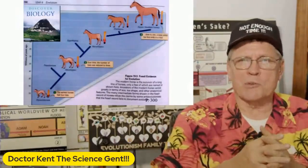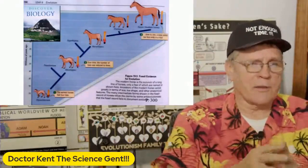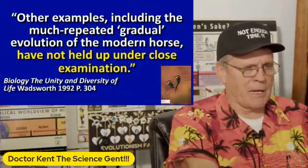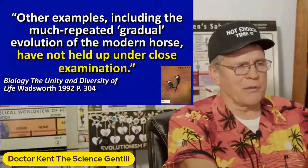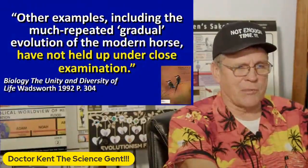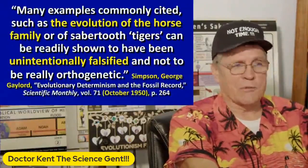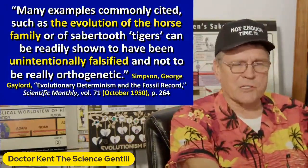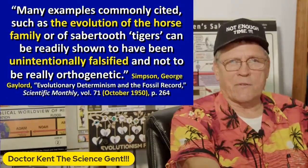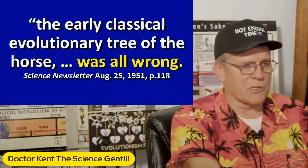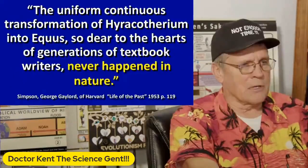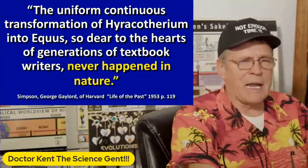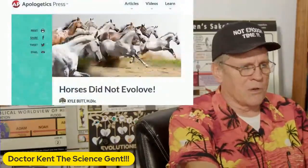Could it be that the hyrax has always made baby hyrax? You don't know that they've changed anything. The horse evolution has been disproven for 60 years. I'm surprised you're still using that. A biology textbook on my shelf says other examples, including the much-repeated gradual evolution of the horse, have not held up under close examination. G.G. Simpson, who was a strong proponent of evolution before I was born, said many examples commonly cited like the horse evolution can be readily shown to have been unintentionally falsified — he said that in 1950. The early classical evolution of the tree of the horse was all wrong, Science Newsletter 1951. Uniform continuous transformation of Hyracotherium to Equus, so dear to the hearts of generations of textbook writers, never happened in nature. Horses did not evolve.